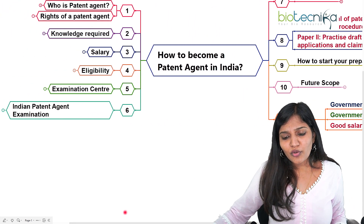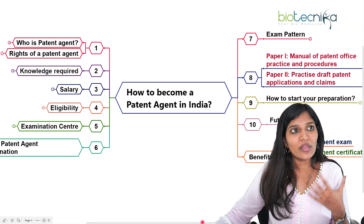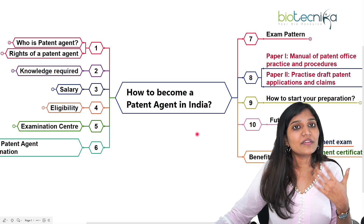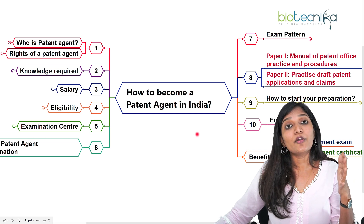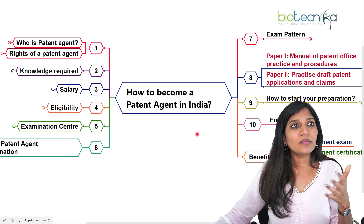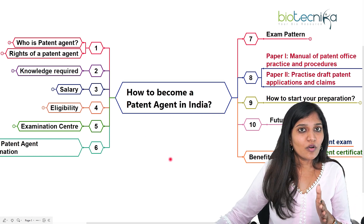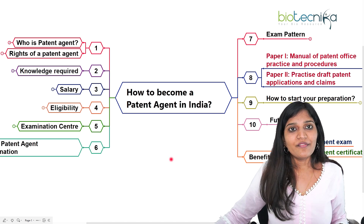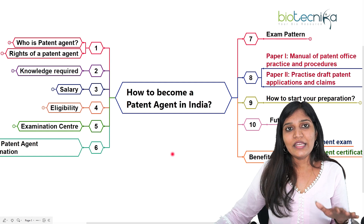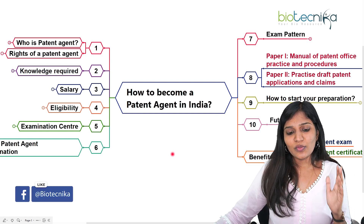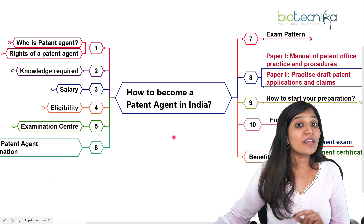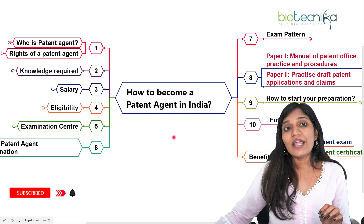The benefits are: a government job, a certificate, and a very good salary. There is less competition compared to exams like UPSC or SSC. As a biotechnology or science graduate, you already understand scientific interventions and inventions, so it will be easy to read biotech and chemistry research and file patents for scientists. You'll deal with scientists, companies, and many organizations. Whether you're a fresher or experienced — bachelor's, master's, or PhD — the patent agent exam is a wonderful opportunity with limited portions to study, no negative marks, and less competition.